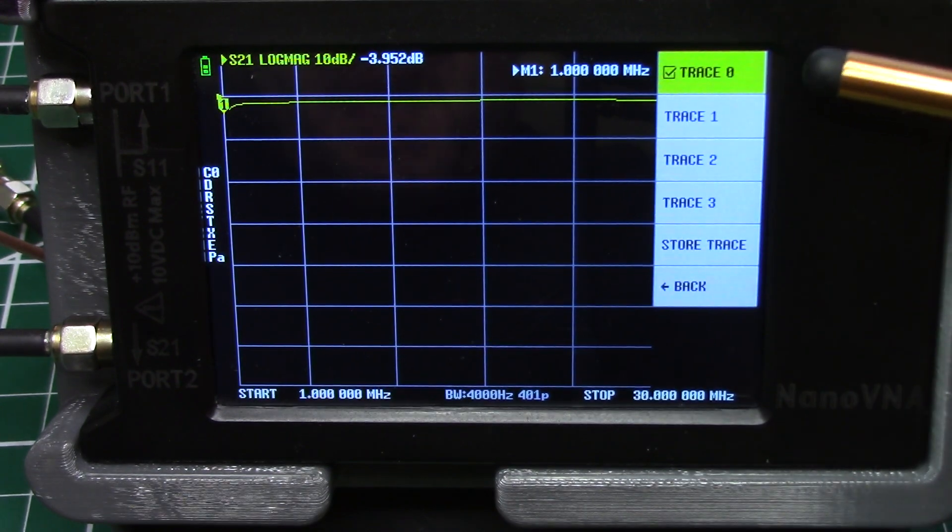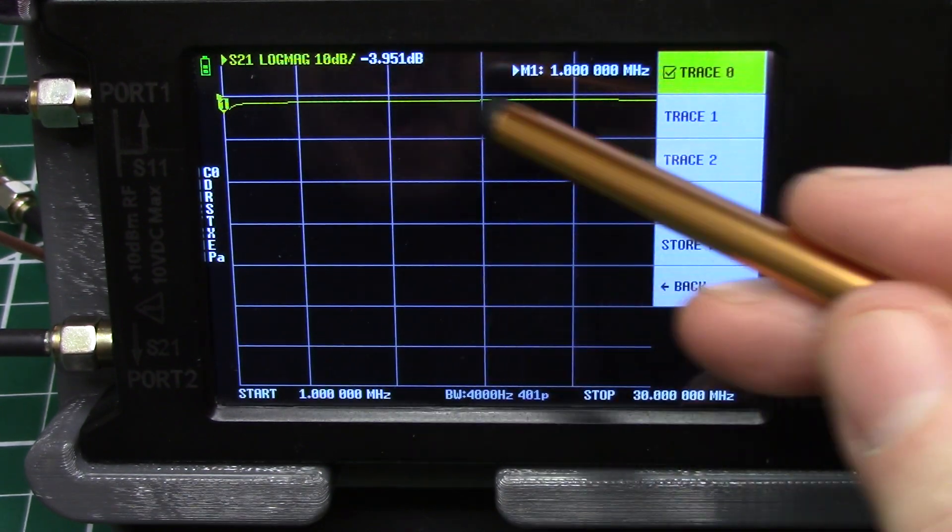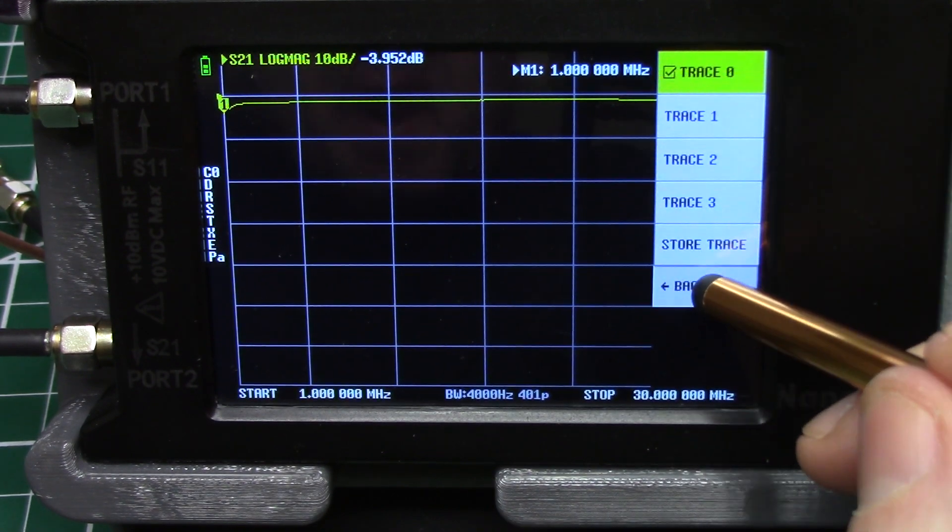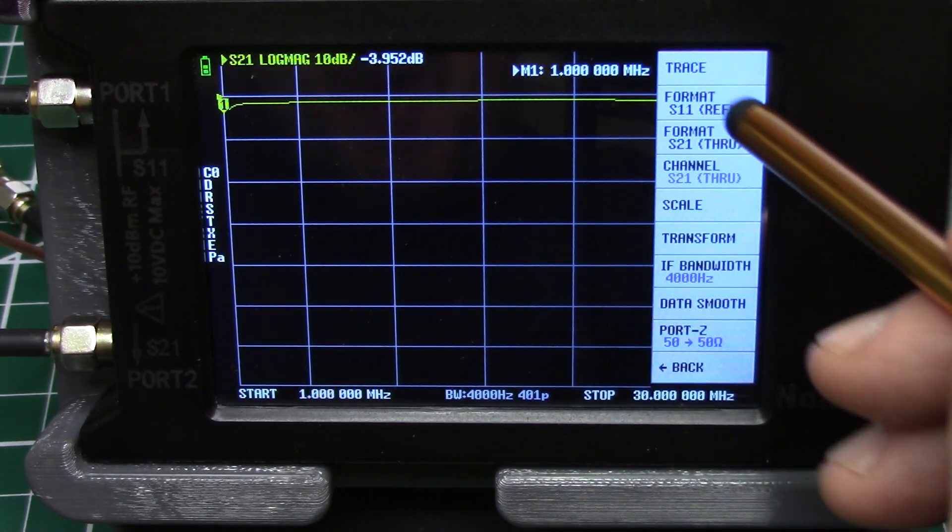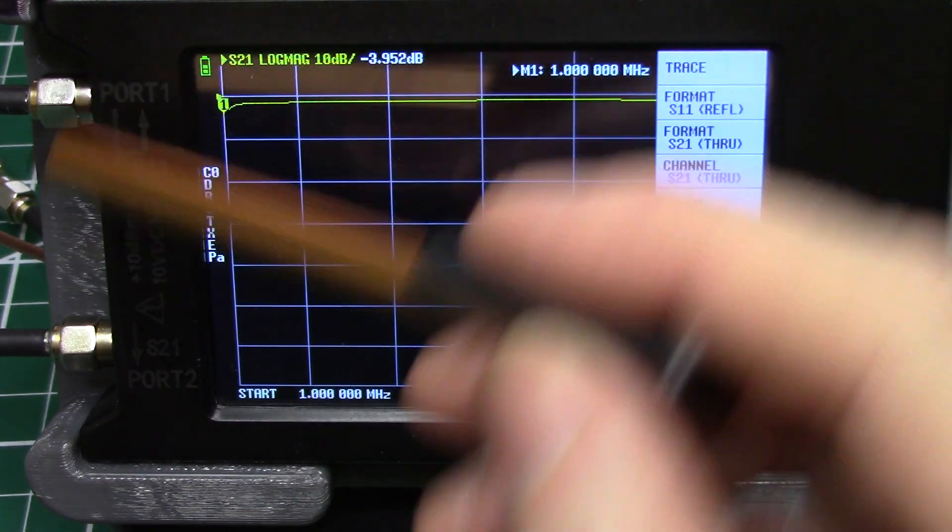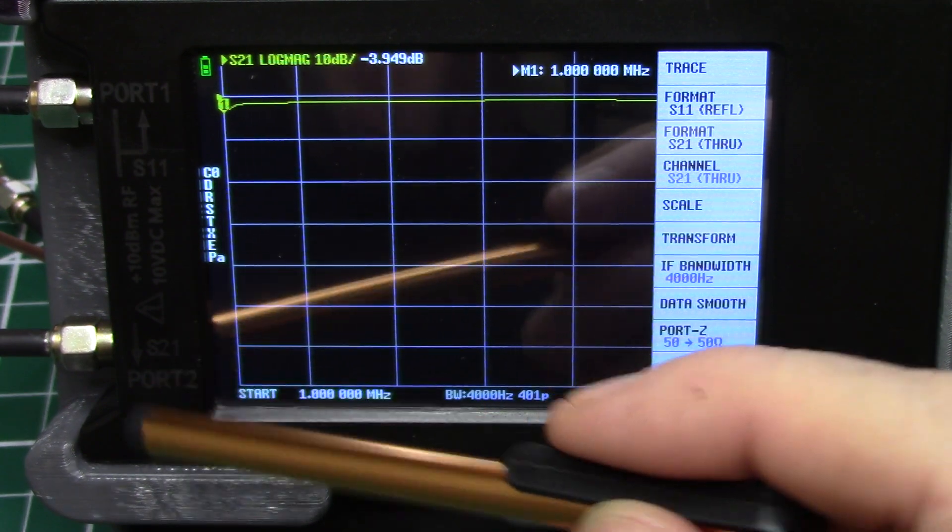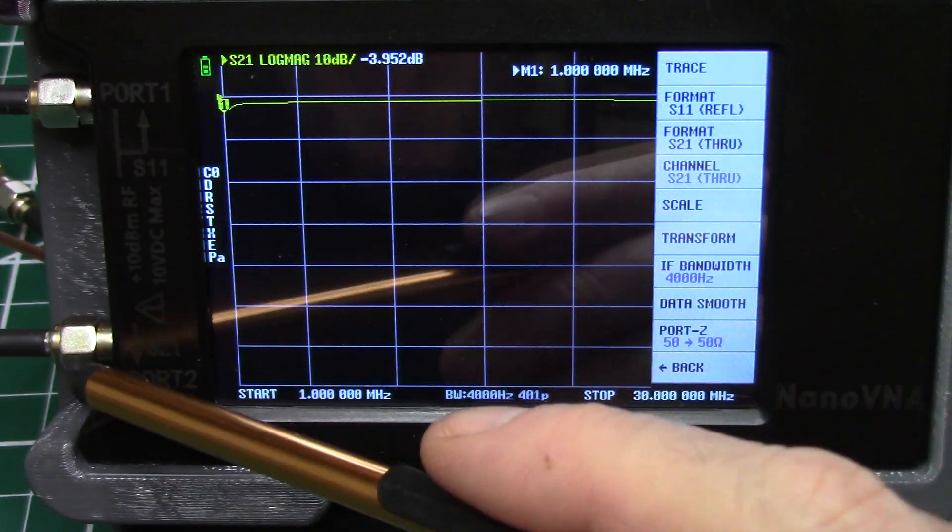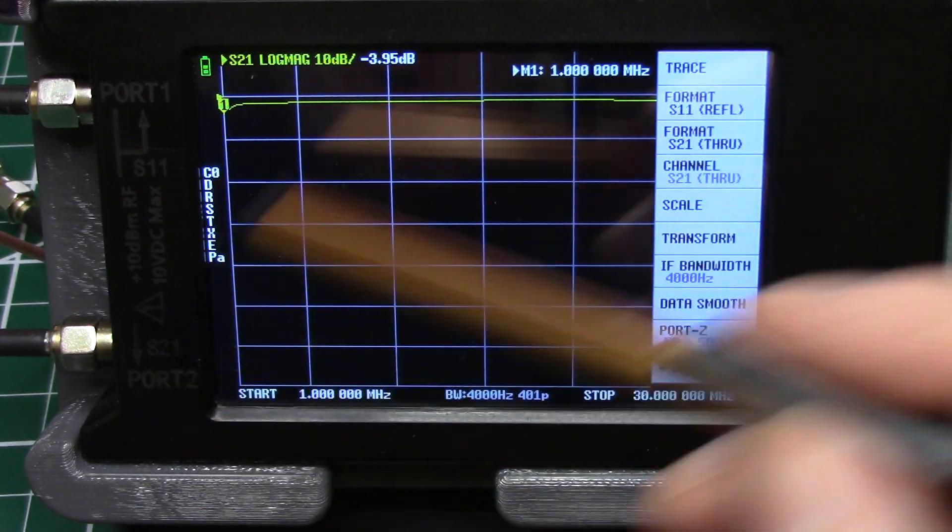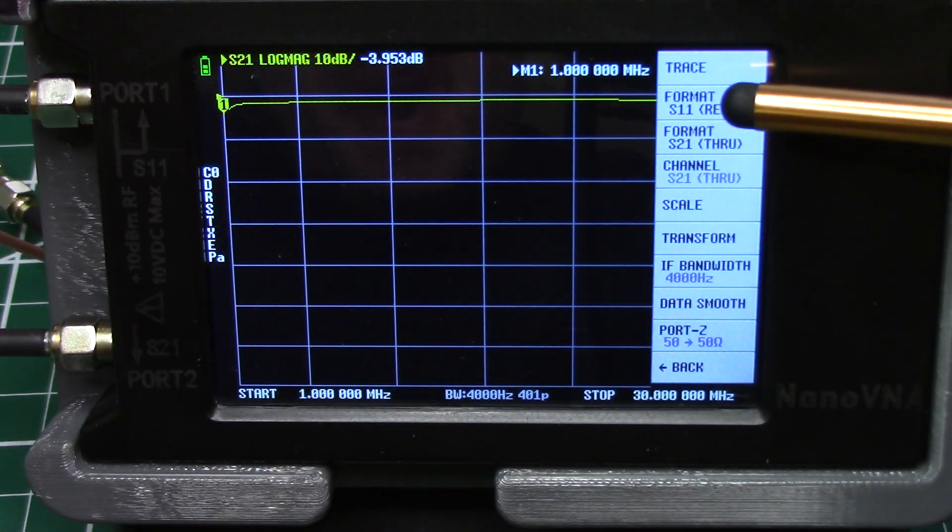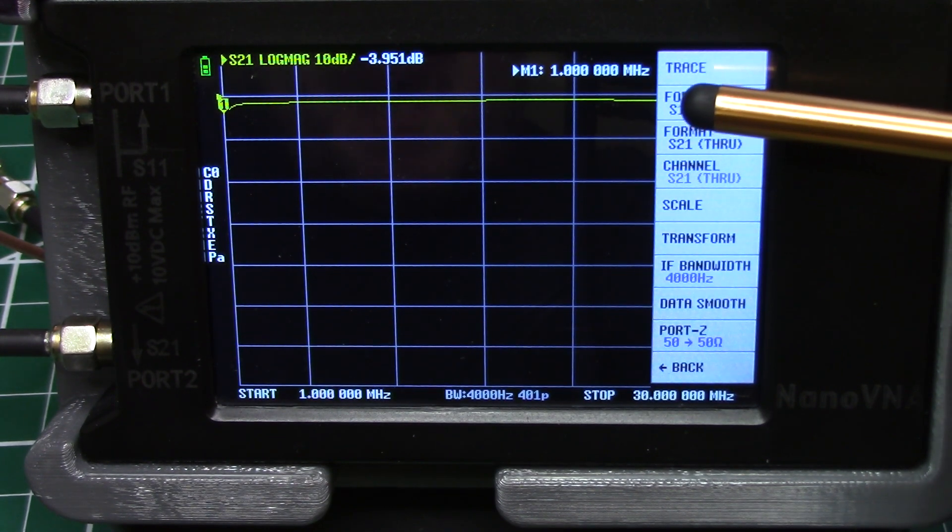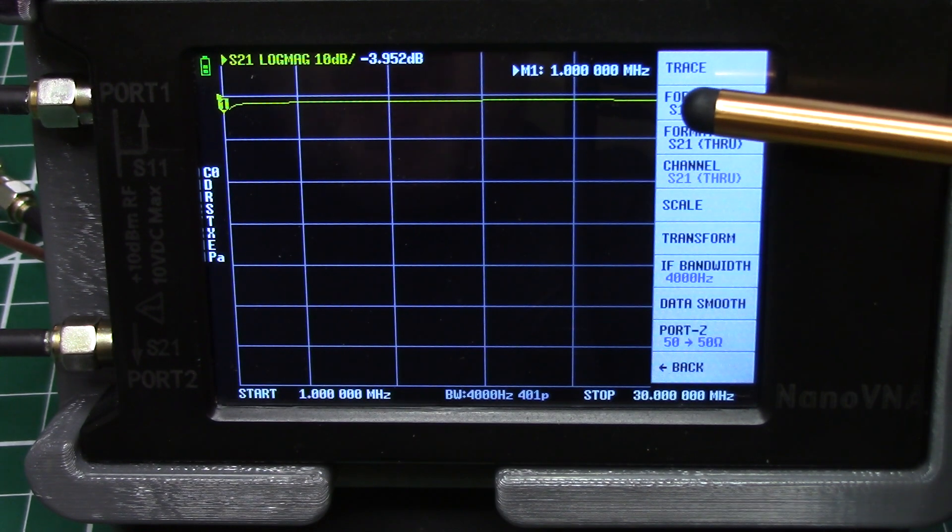So the only thing we've got left is trace zero which is S21 log mag. And whatever trace you have selected if you want to change what it's measuring go ahead and select a trace, go back, then go to the format. All right so since we're using the S21 port or port 2 this is what's measuring so we want to use the S21 format.